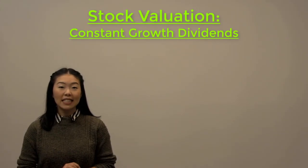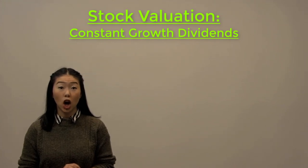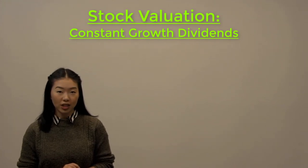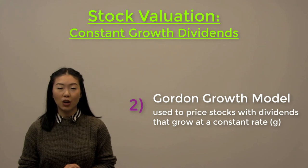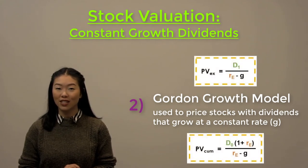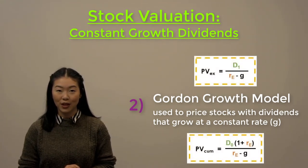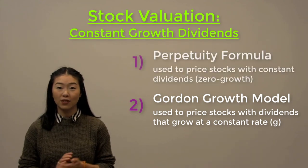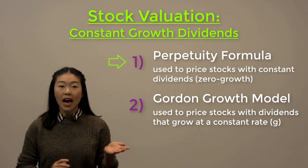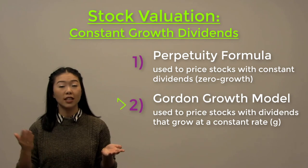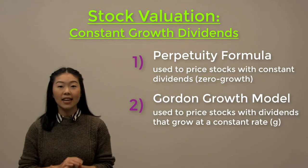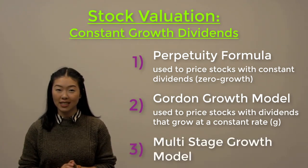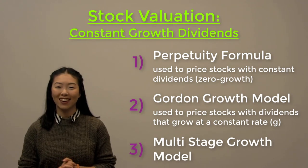This brings us to the end of part 2. The key takeaway from this video is that for dividends that are expected to grow at a constant rate G, we use the Gordon Growth Model to calculate the price of these constantly growing stocks. By now, you have learned how to calculate the price of a stock with constant dividends, as well as the price of a stock with constantly growing dividends. In the next video, we will be exploring the Multi-Stage Growth Model. Hope to see you there.